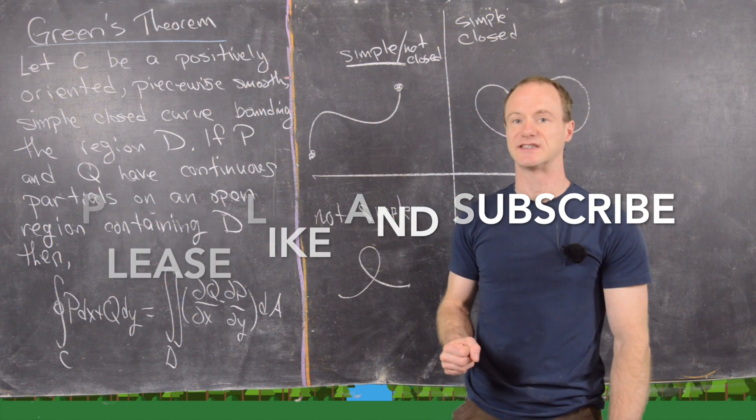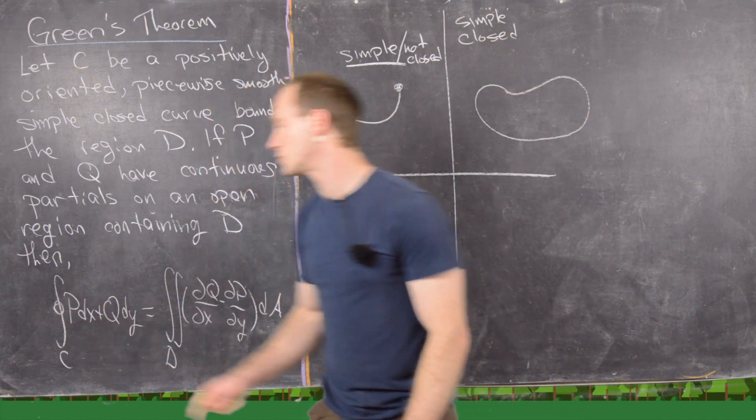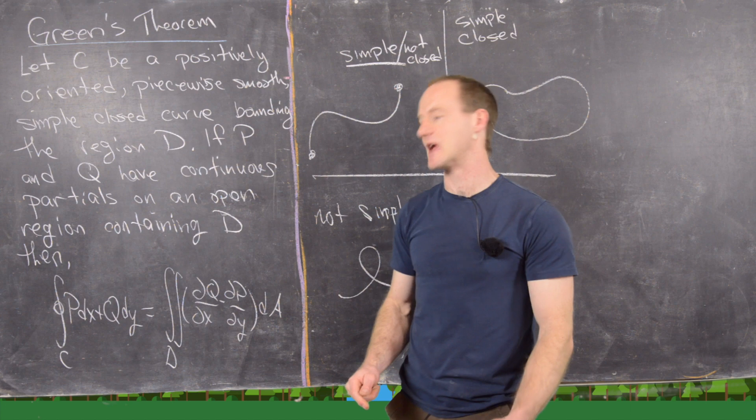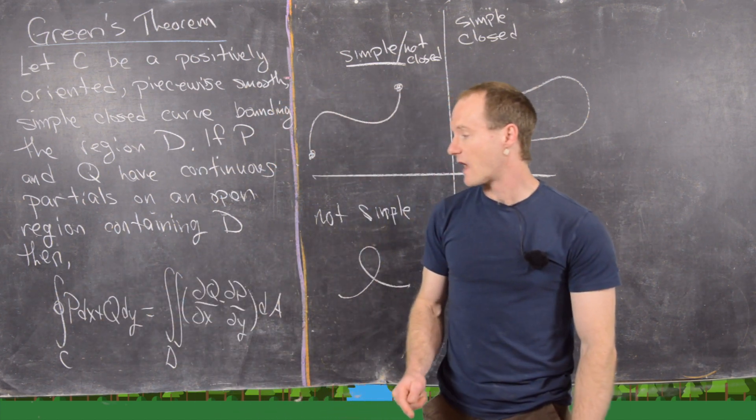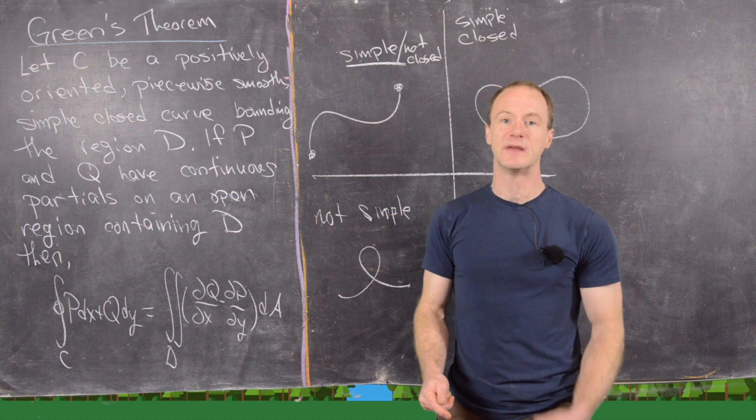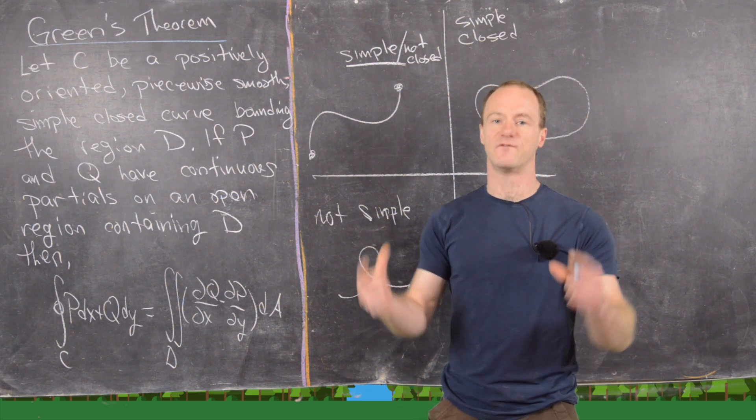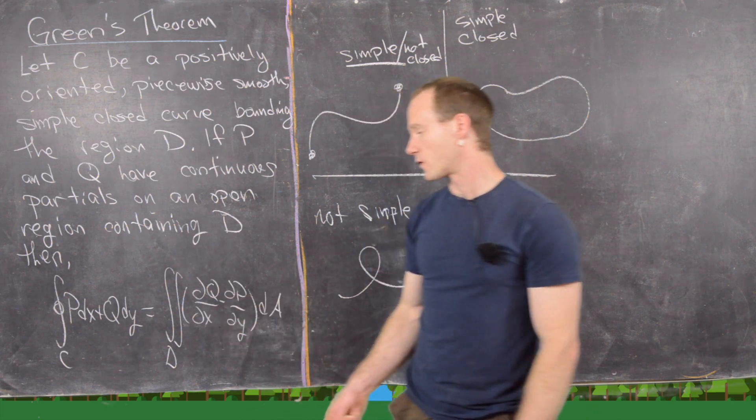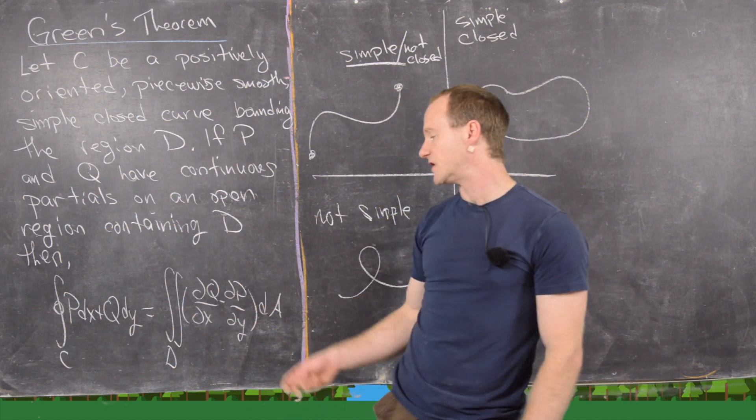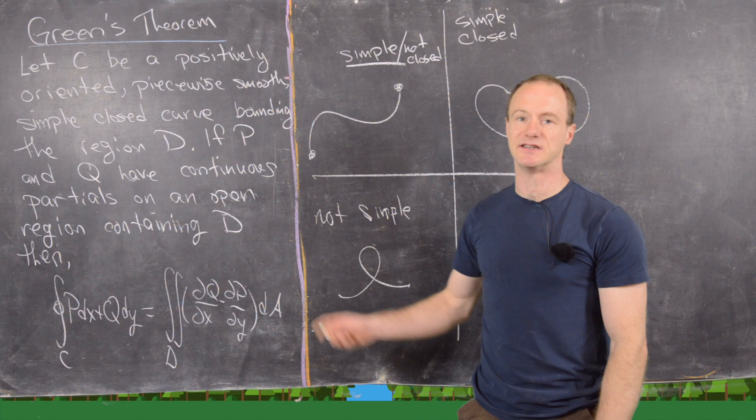This isn't necessary, but often when C is a closed curve we put a loop in there in the integral to indicate that. And notice that this is really a line integral over the vector field P i plus Q j or the vector P Q. And then that's equal to the double integral over the region D of dQ dx minus dP dy dA.